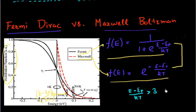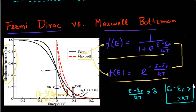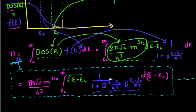In the case of the integral we are concerned with in this video, as long as my EC — because that's the minimum energy I'll be starting from — as long as EC minus EF is greater than 3kT, then I'm okay to replace the Fermi-Dirac statistics with Maxwell-Boltzmann statistics. It's important to keep in mind that I can make this replacement only as long as my Fermi energy is separated from the conduction band by a distance of 3kT.